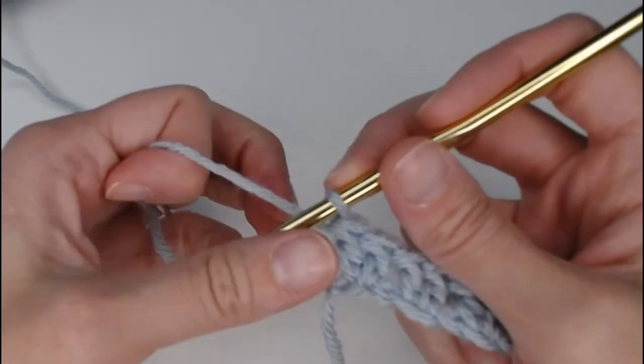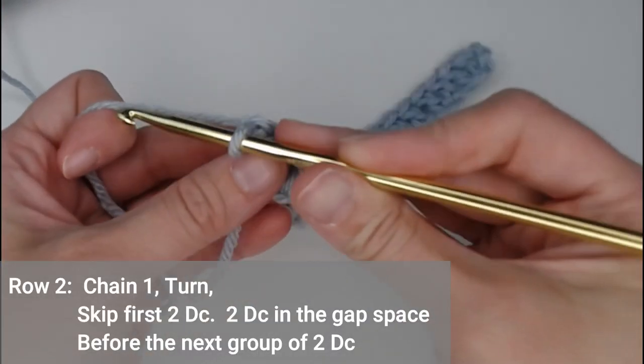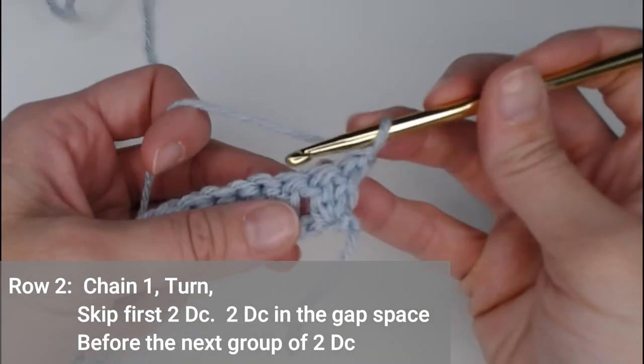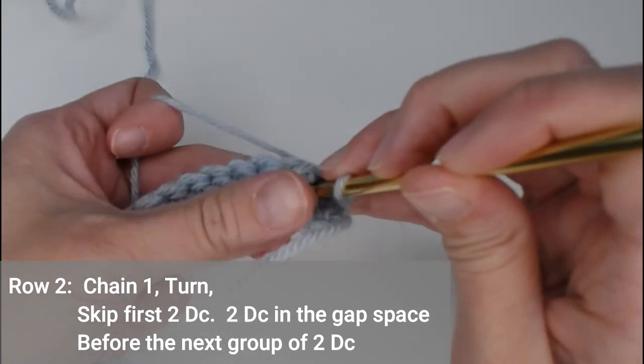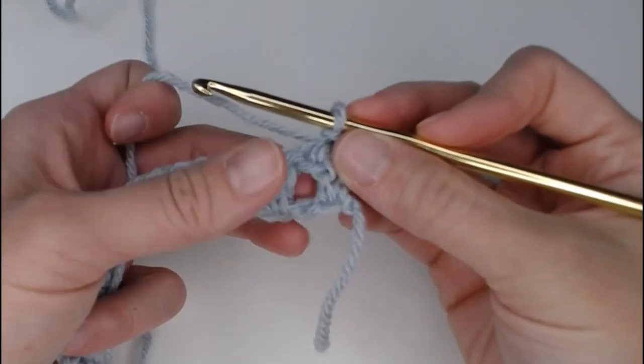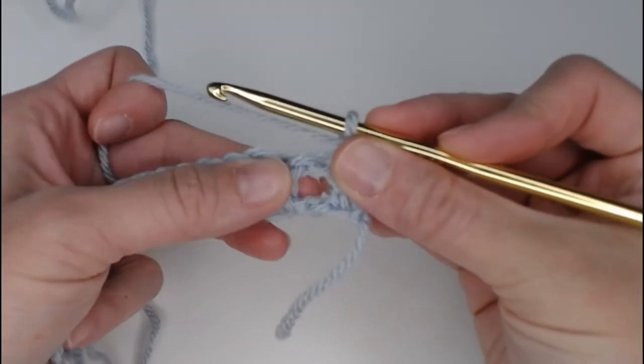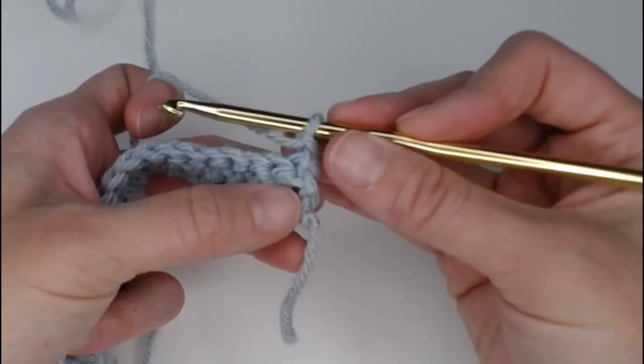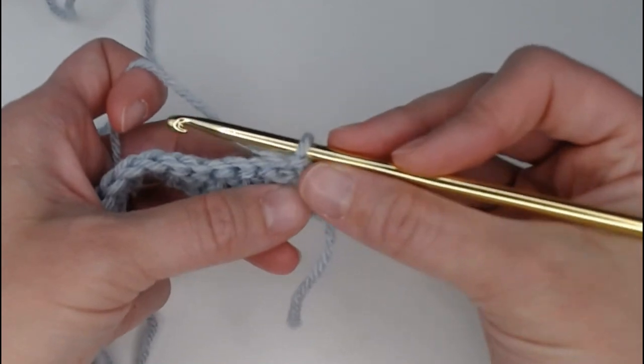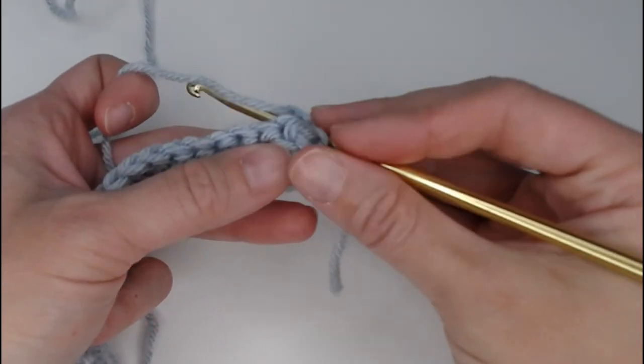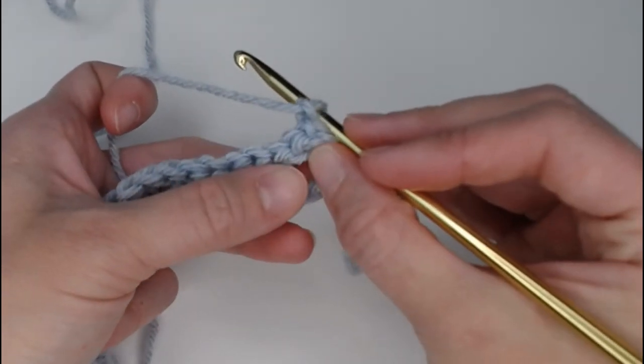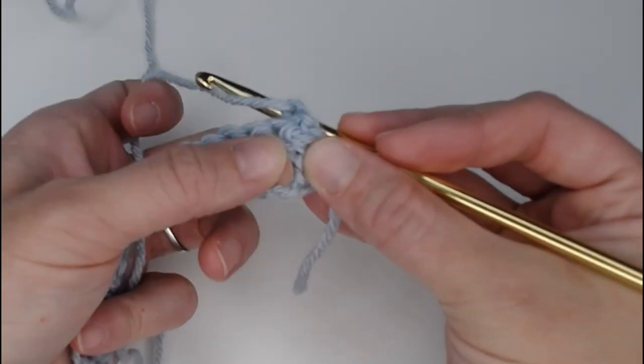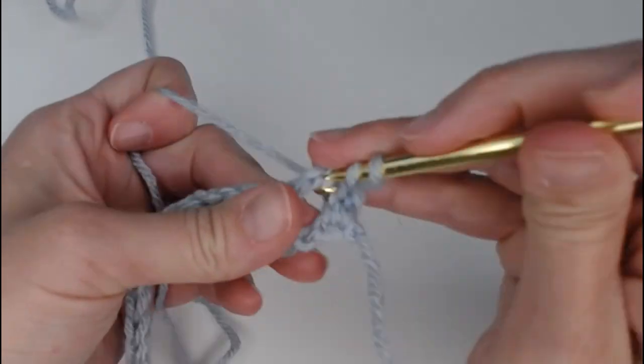On to row 2. We're going to chain 1, turn our work, and we are going to put 2 double crochets in this space right here between the 2 groups of 2. Okay, we are not putting anything between our 2 double crochets. We are going to skip 1 double crochet, skip the 2 double crochets, and above that skip chain spot, we are going to put 2 double crochets.